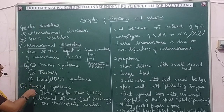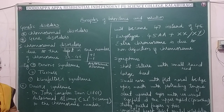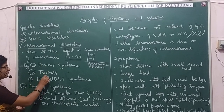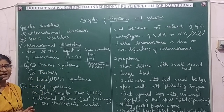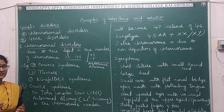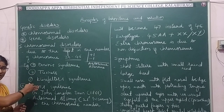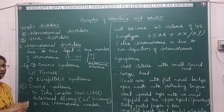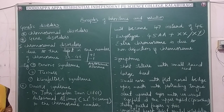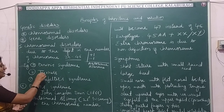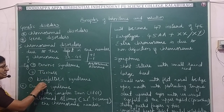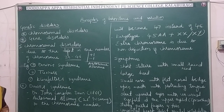There are three chromosomal disorders in our syllabus: Down syndrome, Turner syndrome, and Klinefelter syndrome. These three diseases are asked in the annual theory exam for three marks each. Down syndrome is an autosomal disorder, while Turner's and Klinefelter syndromes are allosomal disorders.